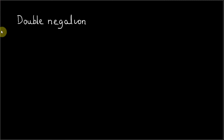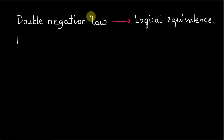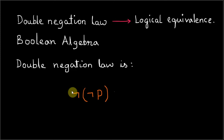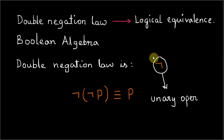In this video I'm going to talk about double negation law, which is an equivalence. Double negation is a very popular equivalence and you will find this in boolean algebra also. The double negation law is: negation of negation of P is equivalent to P. One interesting thing about negation is that it is a unary operator — it means that you cannot apply this operator on more than one variable.